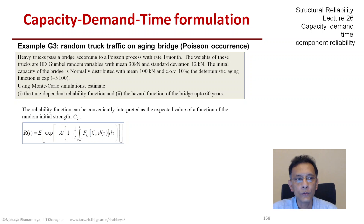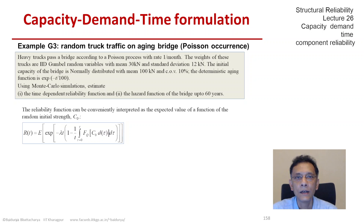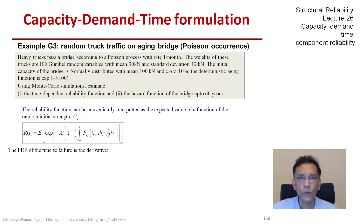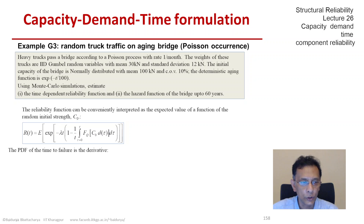Earlier in case 3B, it was exponential minus lambda t times 1 minus CDF. Now we have the area under the CDF normalized by the length of the window in time. Since we are asked to find the hazard function, we also need the PDF either analytically or numerically.